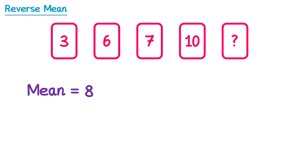It's actually possible with all of the information we have here to work out that this number must be 14. Let's have a think about how we found the mean. When we found the mean we added up all of the numbers, and then we divided by 5 since there were 5 of them, and this gave us the answer of 8. If we now do this process in reverse, starting with the mean of 8, rather than dividing by 5 we multiply by 5.